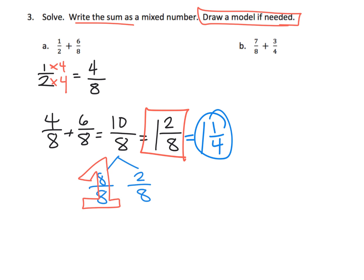Parents and teachers, if your students want to simplify and turn one and two eighths into one and one fourth, they're welcome to. But at this point we're happy with the answer as one and two eighths. Also, let your students draw a model if they need to. They do not have to do this using the algorithm. There is no need to rush into some sort of abstract thing that forces students into blindly following a rule.